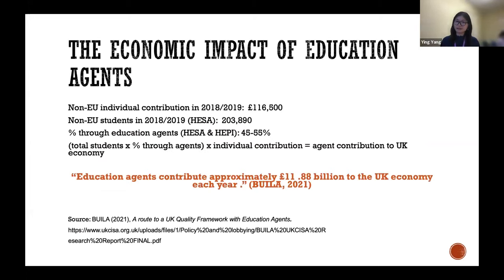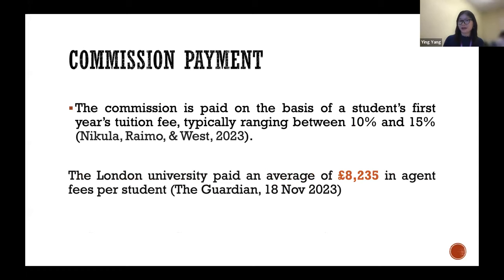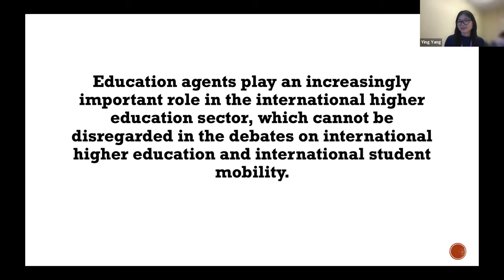Looking at the economic impact agents generate, according to BULA 2021, education agents contribute approximately £12 billion to the UK economy each year. Universities pay commission to agents on the basis of a student's first year tuition fee, typically ranging between 10% and 15%. Last weekend, the Guardian reported that one London university paid an average of around £8,235 in agent fees per student. Education agents have clearly emerged as an important role in international student recruitment.